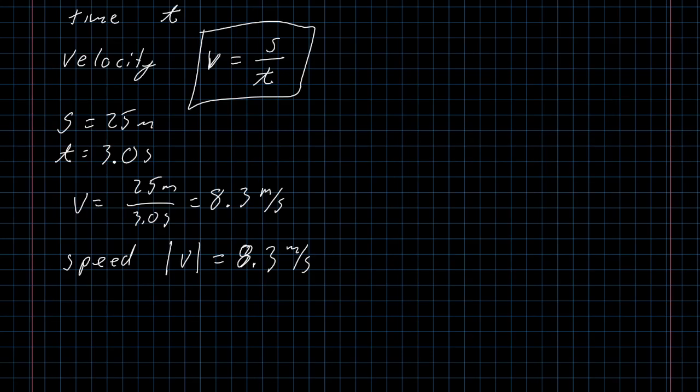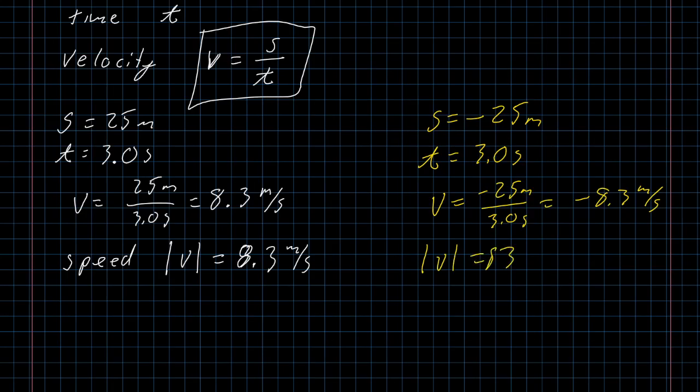But, if I look at that other scenario where I was moving from the right to the left, from the x equals 30 to the x equals 5 point, my displacement in that case was negative 25 meters. And, if I say that my time, let's go with the same 3.0 seconds, then my velocity would be negative 25 meters over 3.0 seconds, which comes out as negative 8.3 meters per second. And, yet, my speed is the same, 8.3 meters per second. So, your speed doesn't care if you're moving to the right or to the left. Your velocity does care.